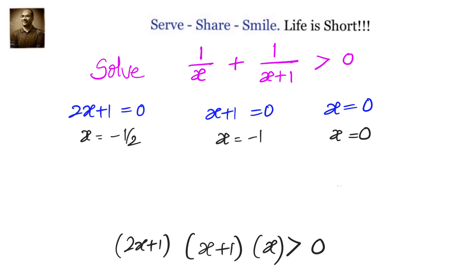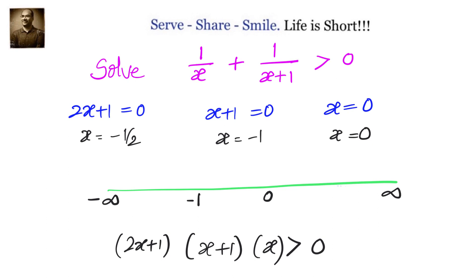Now let us take the number line and divide it into intervals. We go from minus infinity to infinity. We have the points minus 1, then minus 1/2, then 0. These critical points divide the number line into intervals, and we need to determine which intervals satisfy our inequality.